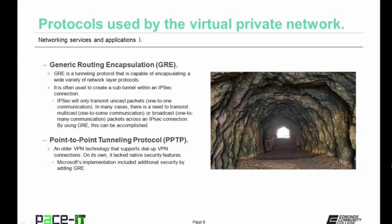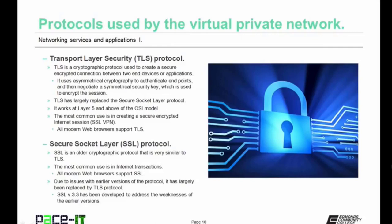Then there is Point-to-Point Tunneling Protocol, or PPTP. This is an older VPN technology that supports dial-up VPN connections. On its own it lacked native security features, so it wasn't very secure. But Microsoft's implementation included additional security by adding GRE to Point-to-Point Tunneling Protocol. Transport Layer Security, TLS, is another common VPN protocol — a cryptographic protocol used to create a secure encrypted connection between two end devices or applications. It uses asymmetrical cryptography to authenticate endpoints and then negotiates a symmetrical security key used to encrypt the session. TLS has largely replaced Secure Socket Layer Protocol, and works at Layer 5 and above of the OSI model.